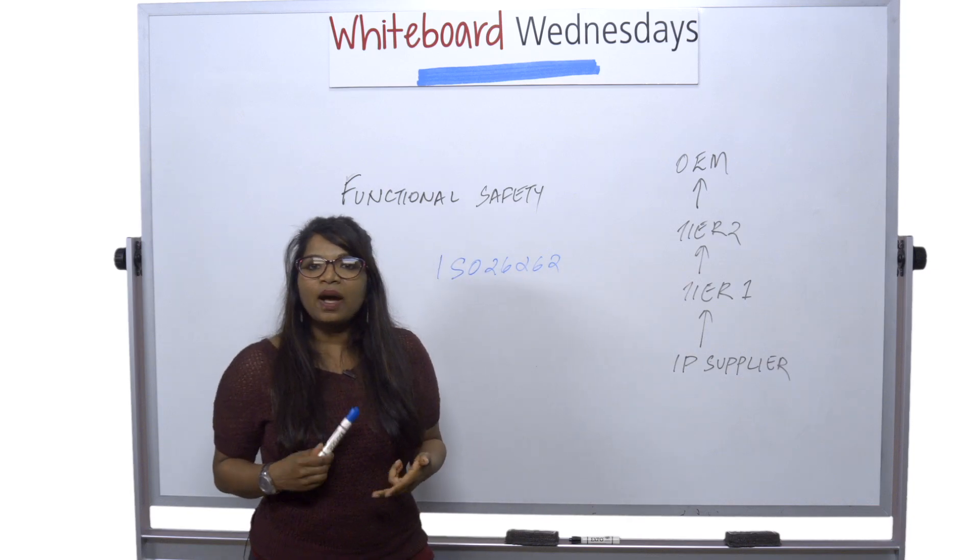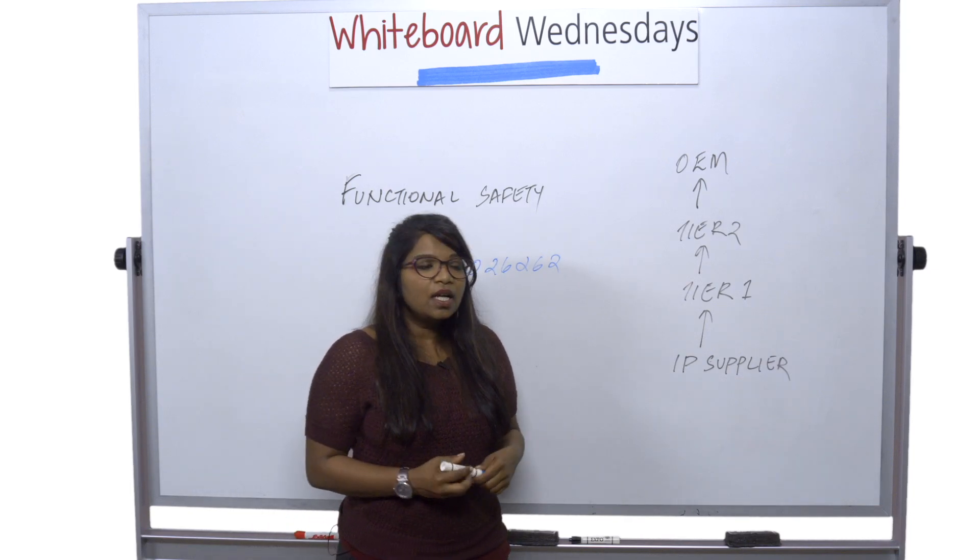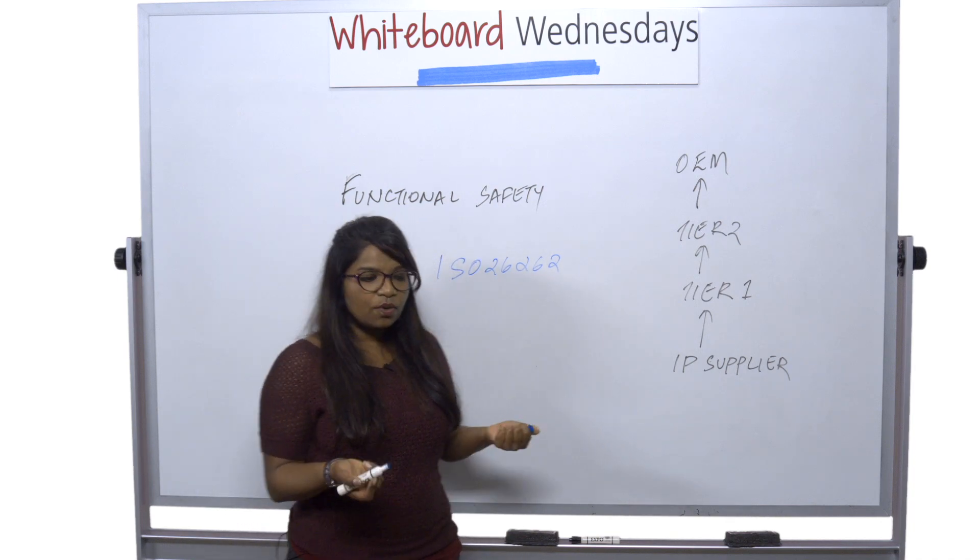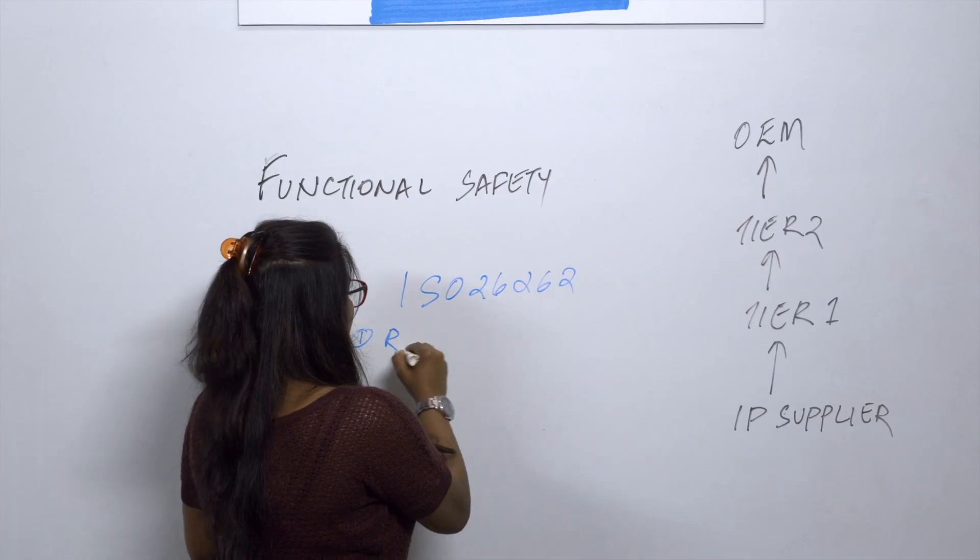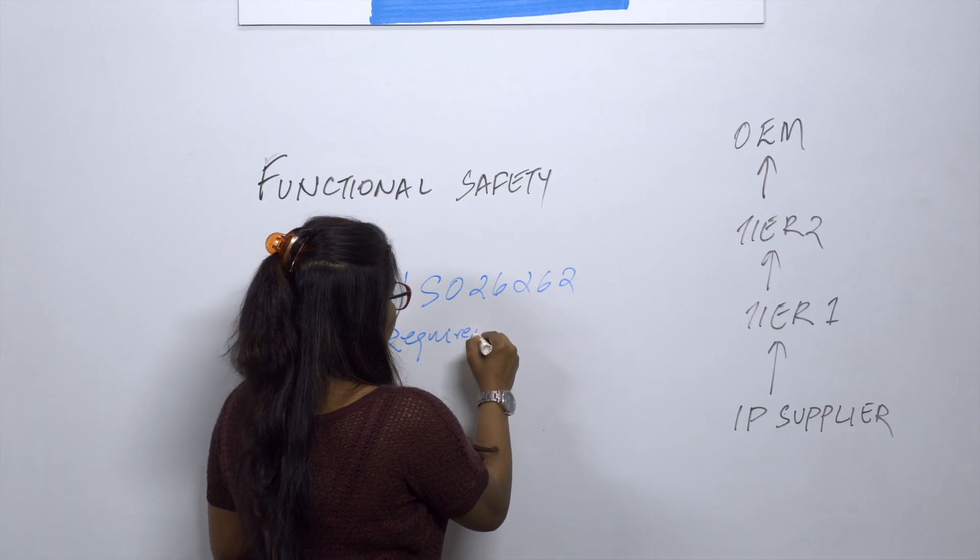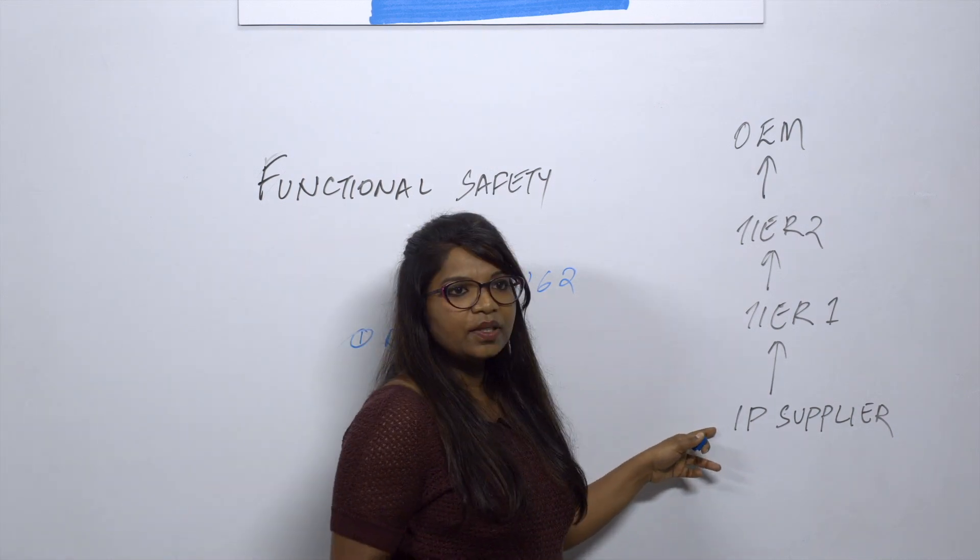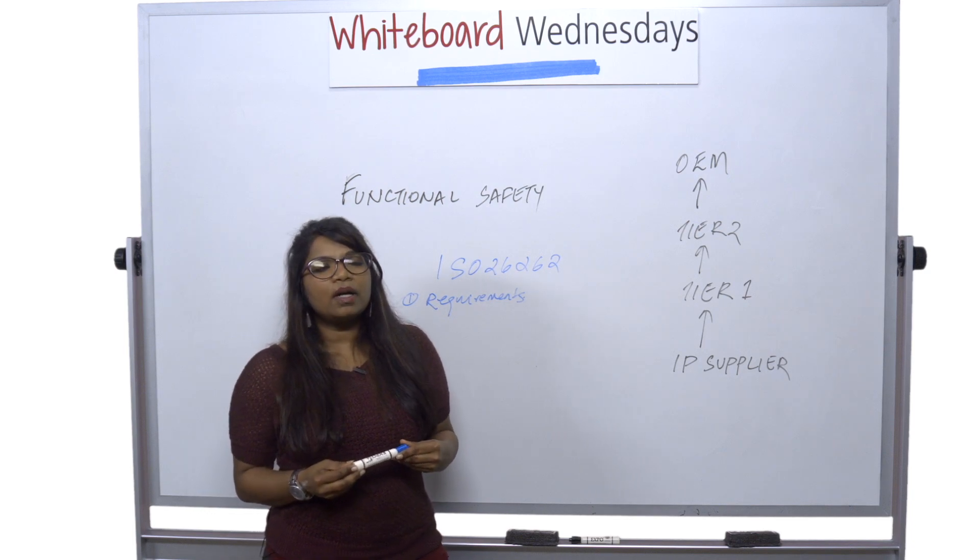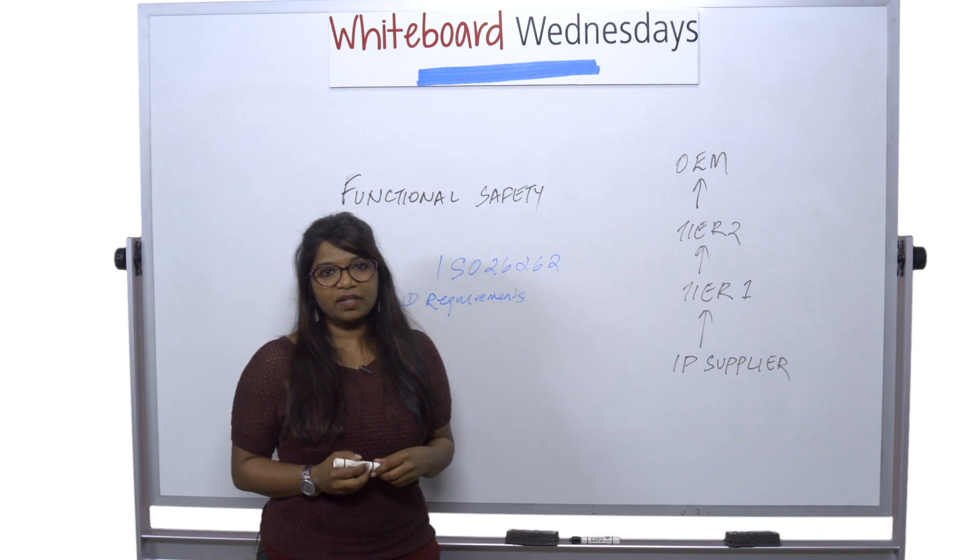So you can have software, you have tools, you have IP, you have a product, you have a system. So the 26262 standard actually provides guidelines to do all of these. Some of the major ones are actually it provides requirements. It provides requirements how you need to develop your safety product. It tells you all your necessary procedures and steps in order to take care of your safety activities.